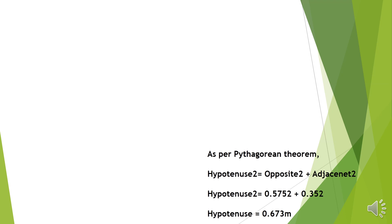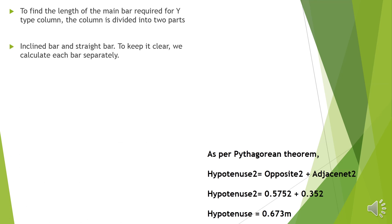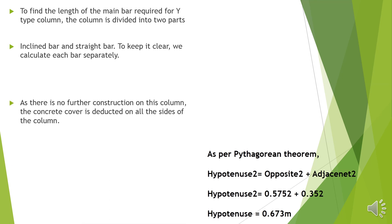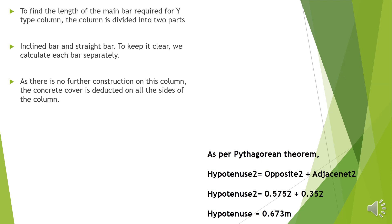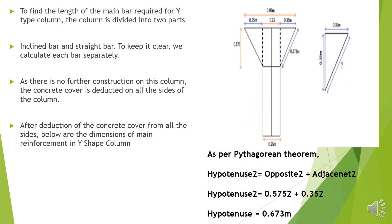The top mesh will be provided here. To find the length of the main bar required for a Y-type column, the column is divided into two parts: inclined bar and straight bar, and we calculate each bar separately. As there is no further construction on this column, the concrete cover is deducted on all sides of the column. After deduction of the concrete cover from all sides, below are the dimensions of the main reinforcement of the Y-shaped column.